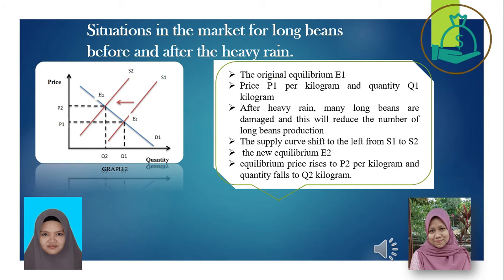Based on graph 2, the original equilibrium E1 is when the demand curve D1 intersects with supply curve S1 at price P1 per kilogram and quantity Q1 kilogram. After heavy rain, many long beans are damaged, reducing production. The supply curve shifts to the left from S1 to S2. The new equilibrium E2 sees price rise to P2 per kilogram and quantity fall to Q2 kilogram.